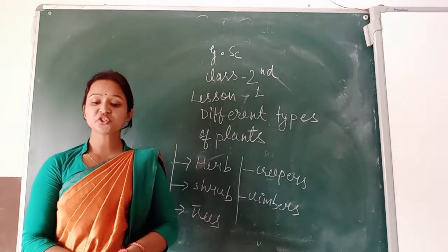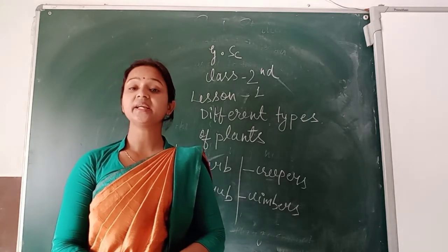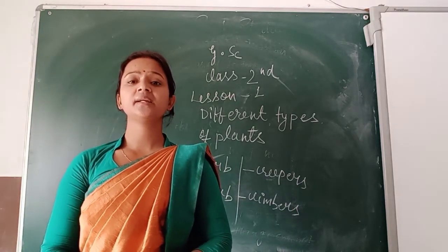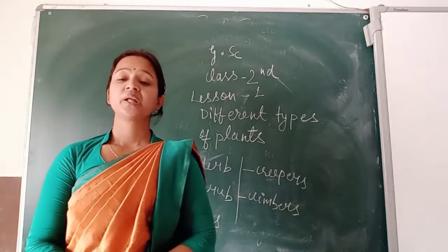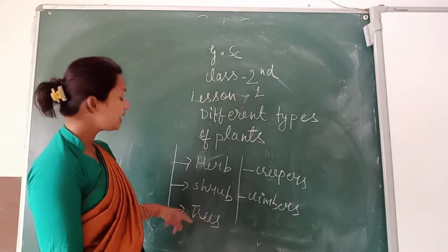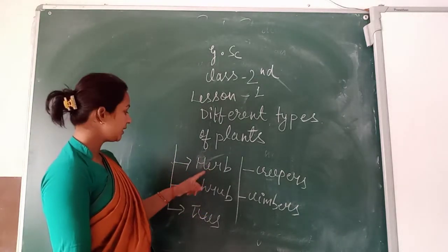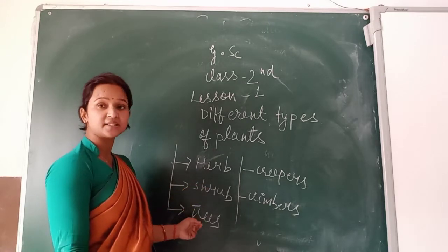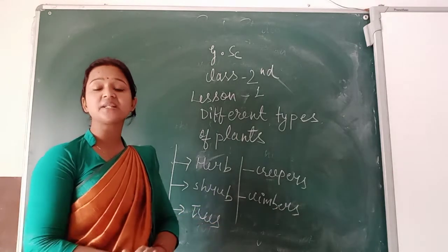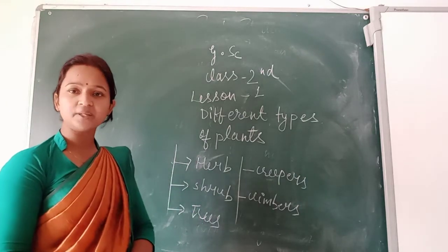Some trees however have no branches, and the coconut tree is an example of a branchless tree. So in comparison to herbs and shrubs, trees are bigger in size and have thick woody stems. Examples of trees are mango tree, peepal tree, neem tree, and banyan tree.